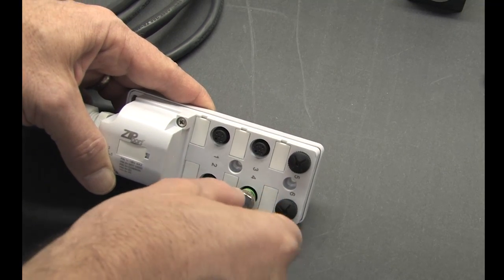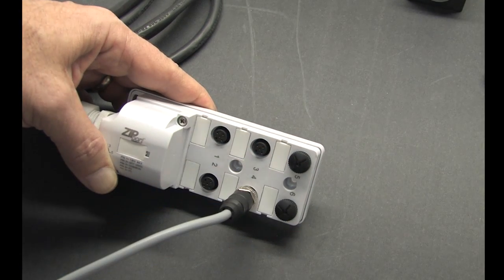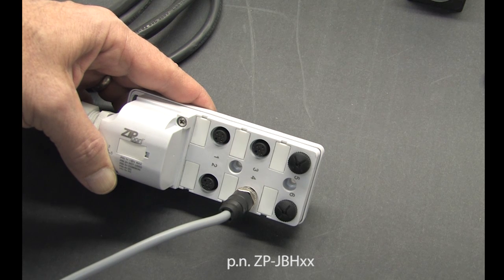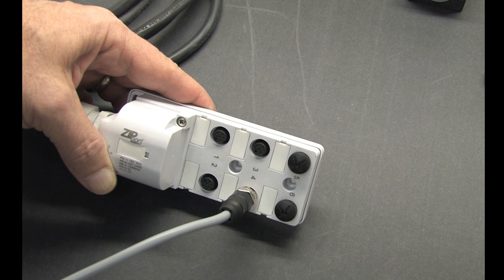Speaking of connectors, these multi-port junction boxes are really handy for combining groups of 4, 6 or 8 sensors into a single cable. That makes cable management for a bunch of sensors so much easier.